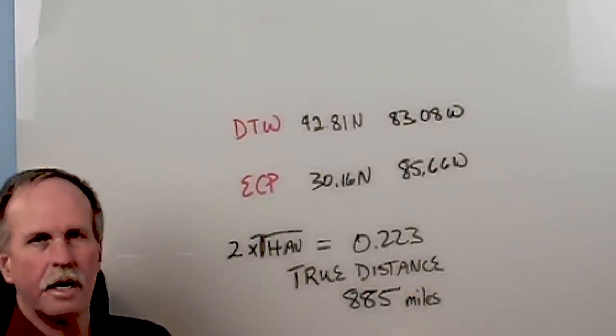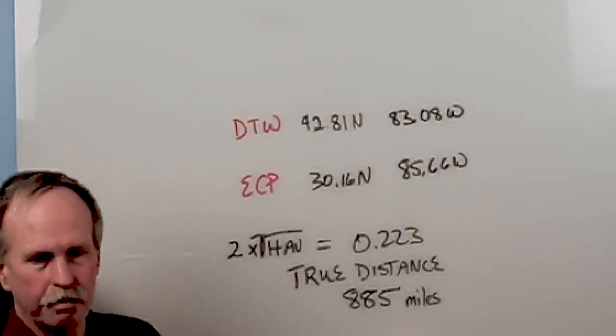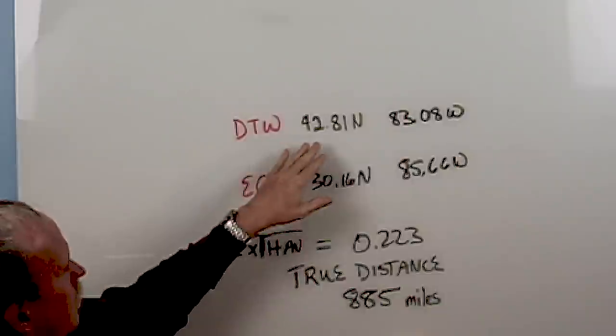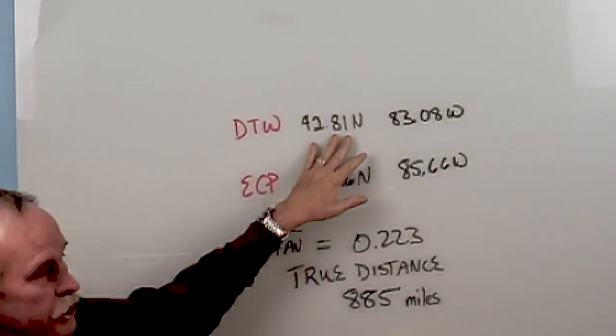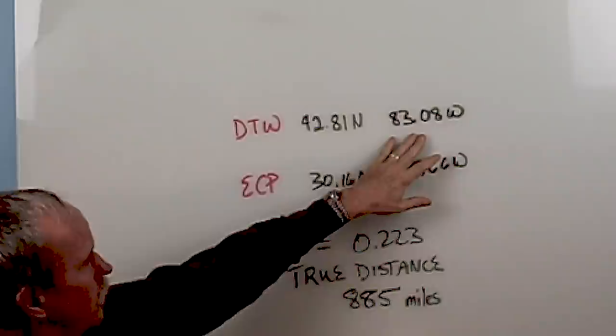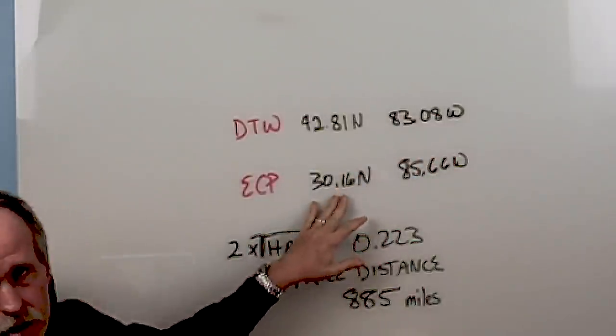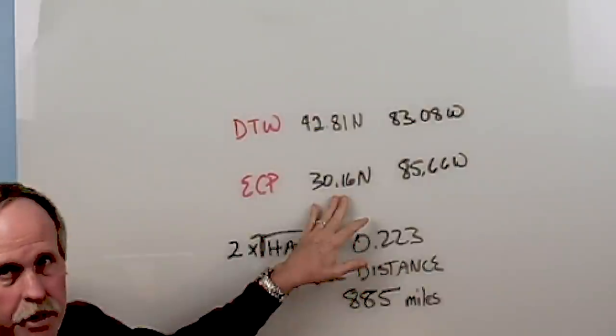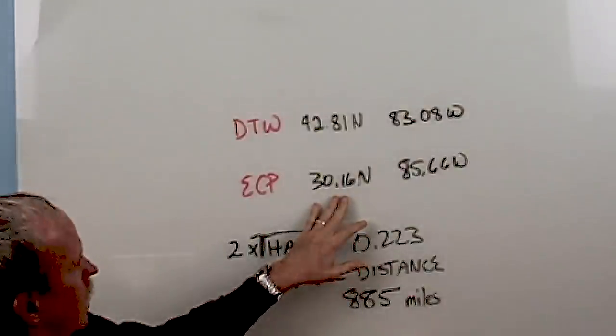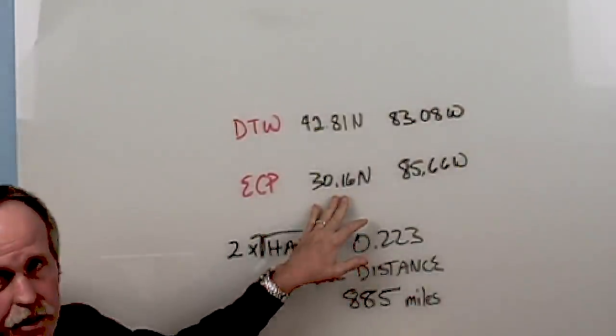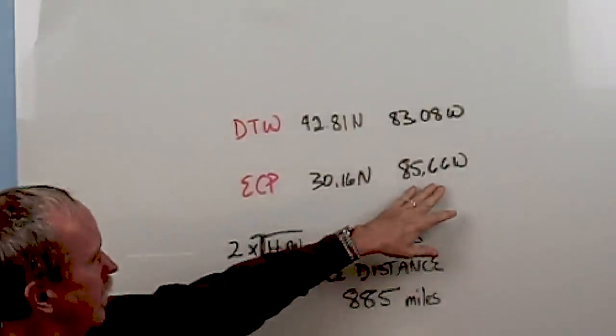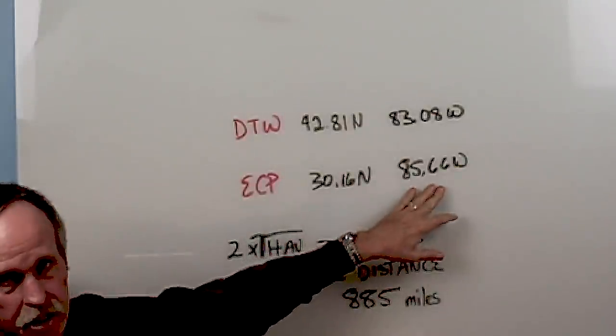Well, let's finish you off with an exercise that you can do at home. The Detroit Metro Airport is located at 42.81 degrees north, 83.08 degrees west. North Florida Beaches Airport in Panama City Beach, Florida, is located at 30.16, 85.66 degrees west.